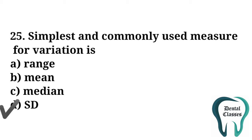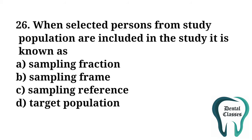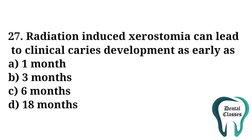The simplest and most commonly used measure for variation is SD — standard deviation. When selected persons from a study population are included in the study, it is referred to as sampling frame — option B. Radiation-induced xerostomia can lead to clinical caries development as early as — the answer is B — three months.